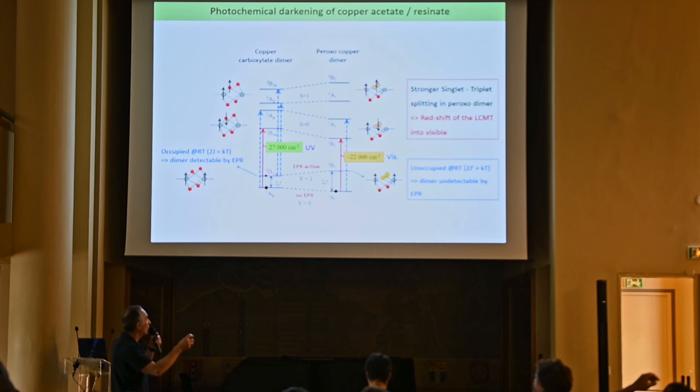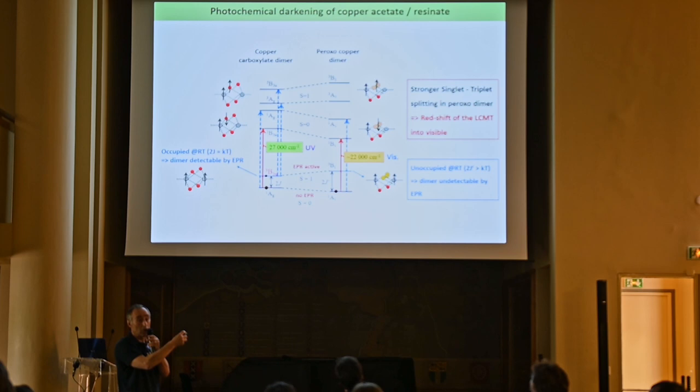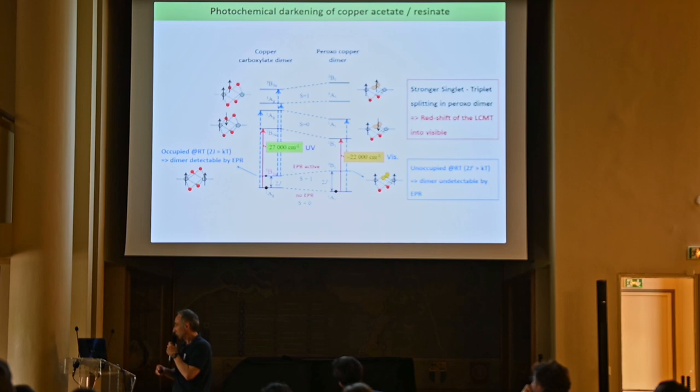In the excited states of the peroxo dimer, where there is one unpaired electron on the copper ions and one on the dioxygen ligand, the exchange interaction is stronger than in the carboxylate dimer. This shifts the absorption threshold downward to about 22,000 wave numbers, which is the reason for the emerging new absorption band observed after irradiation.